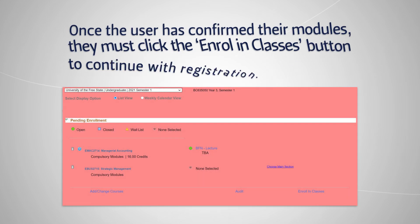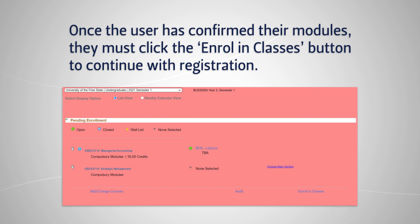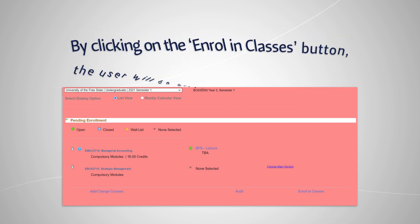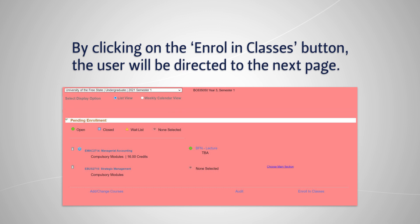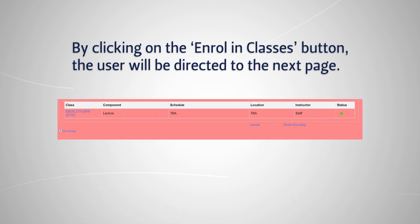Once the user has confirmed their modules, they must click the Enroll in Classes button to continue with registration. By clicking on the Enroll in Classes button, the user will be directed to the next page.